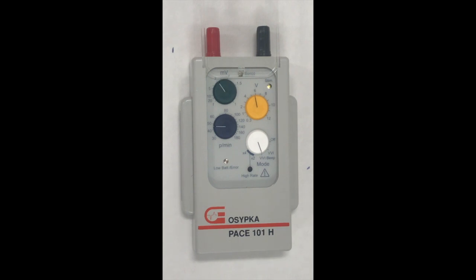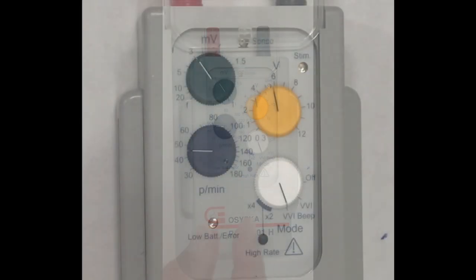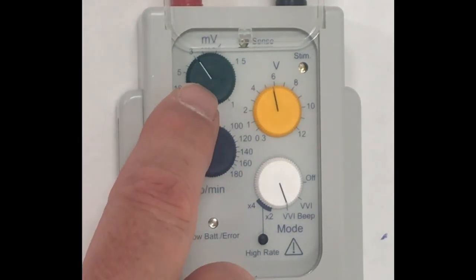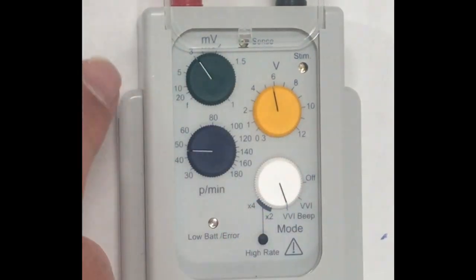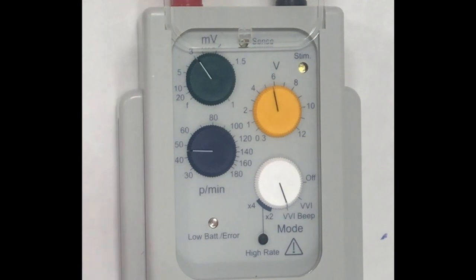To get an idea of how big the R-wave is and how good my device is at sensing, I now need to make the device gradually less sensitive. The way I do that is I take the sensitivity control here, which is currently set to 3 millivolts.